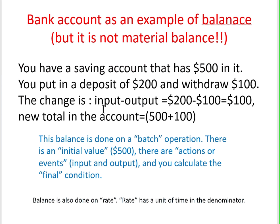The material balance is input minus output. Input is 200 yen and output is 100 yen. So the change is an increase of 100 yen. Now your account has a new amount of money — it has increased by 100 yen.